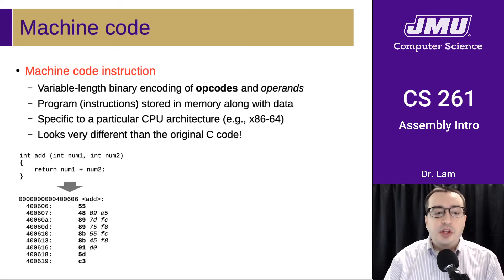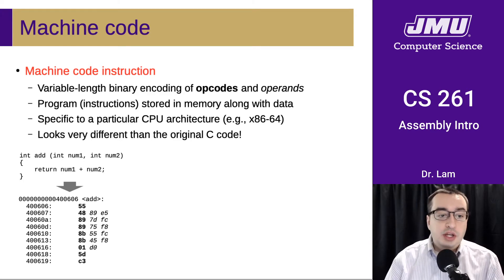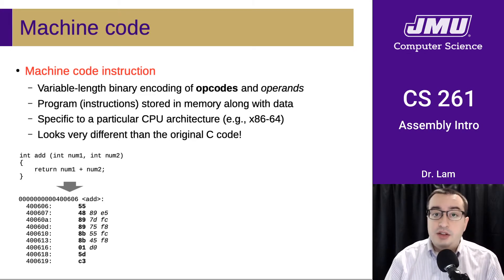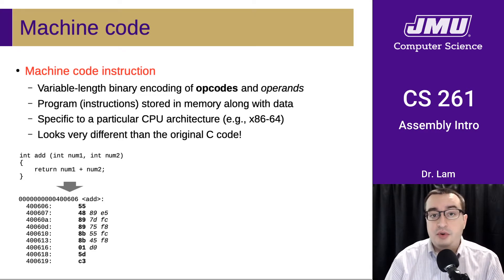At the very low level, instructions are encoded in binary using machine code. Machine code is a variable-length encoding of opcodes and operands — we'll define those terms in just a second. The program itself is stored in memory alongside the data; it's just more bytes. This is why it's important to know the context for those bytes — to know that they are machine code instructions and not some sort of data.